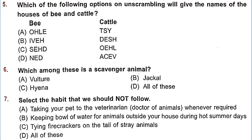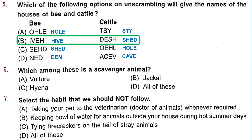Question 5: Which option, on unscrambling, gives the names of the houses of bee and cattle? The house of a bee is hive, and for cattle it is shed. Option A gives hole and stye — not correct. Option B gives hive and shed — correct! Option C gives shed and hole, Option D gives den and cave. The right answer is Option B.